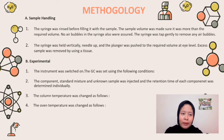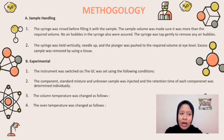Step 3: The column temperature was changed as follows — 100°C initial and final column temperature. The standard mixture was injected and observations were made on the effect of reducing the temperature. Step 4: The oven temperature was changed as follows — 140°C initial and final oven temperature. The standard mixture was injected and observations were made on the effect of increasing the temperature.